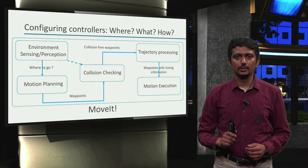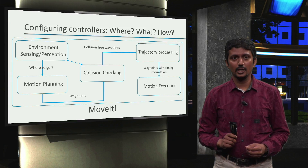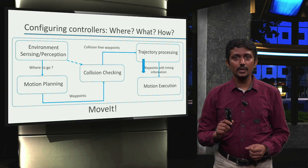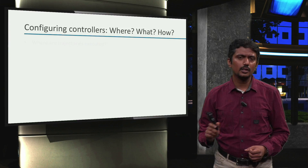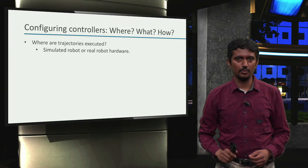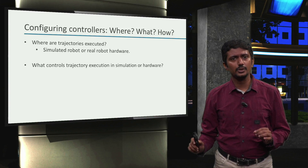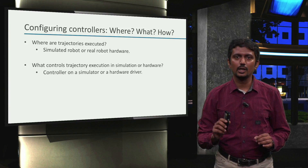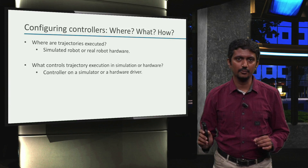Let's again look back at our manipulation overview. As we saw in the last video, the controllers file was a part of trajectory execution launch files. In essence, we are focusing on the part where we are ready to execute a motion. Now, where are trajectories executed? On a simulated robot or on real hardware. What controls trajectory execution in simulation or real hardware? A controller on the simulator or a hardware driver that can move the robot joints by taking the provided waypoints and timing information as reference.